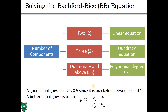To solve the Rachford-Rice equation, consider the number of components. For a binary system you get a linear equation; for three components a quadratic equation; for four or more components, a polynomial of degree C minus 1. A good initial guess for numerical methods is V = 0.5, since V is a fraction between zero and one and 0.5 is the midpoint. A better initial guess is V₀ = (P_bubble − P) / (P_bubble − P_dew).